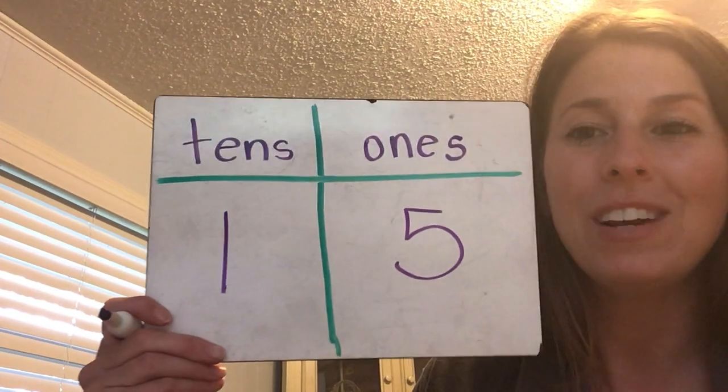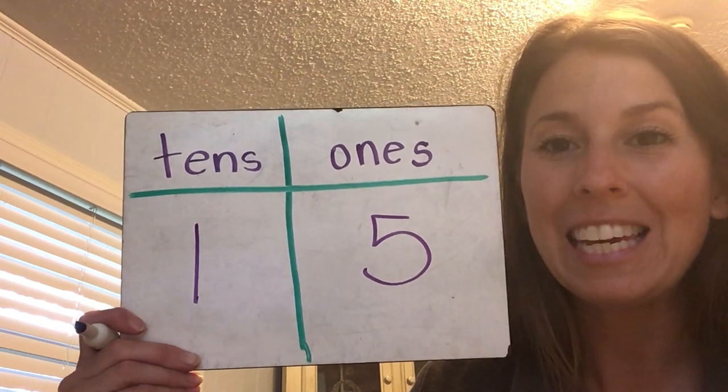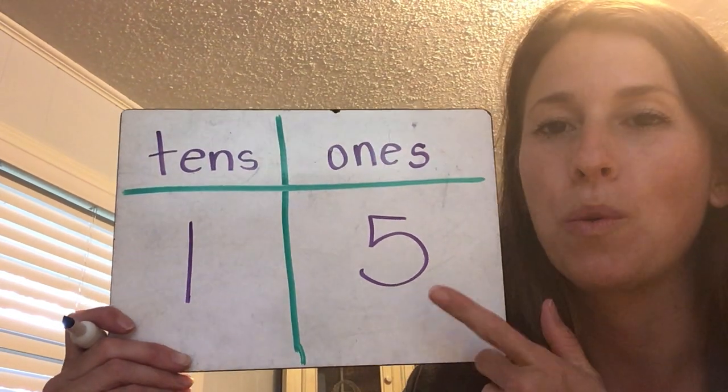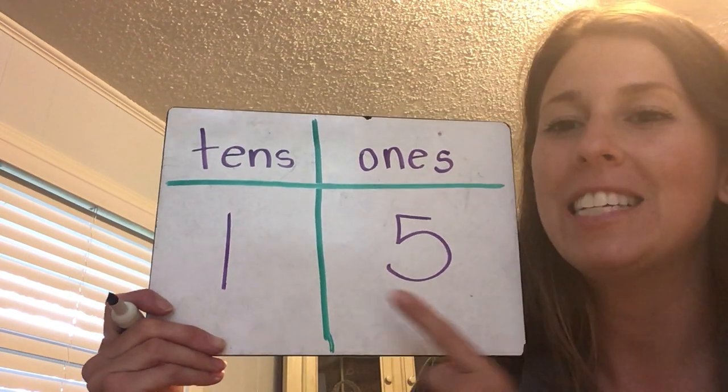My next number — ready for the clue? It has one ten and five ones. One ten and five ones. What is our number? Fifteen. Fifteen is a group of ten and five extra ones.